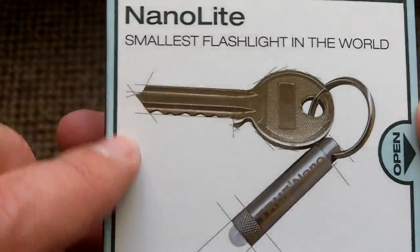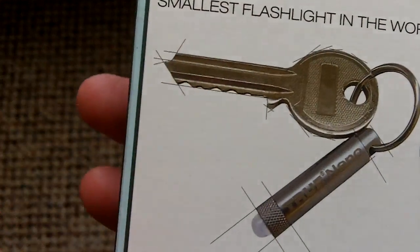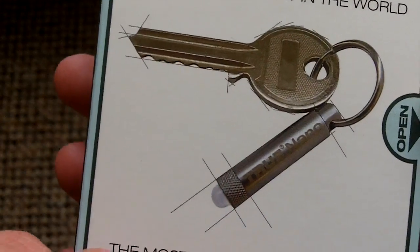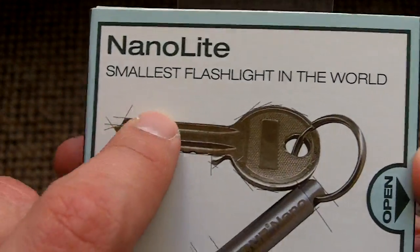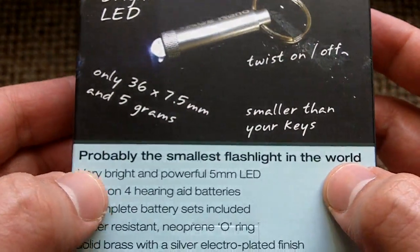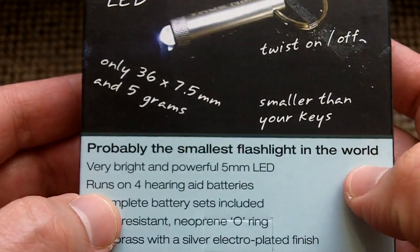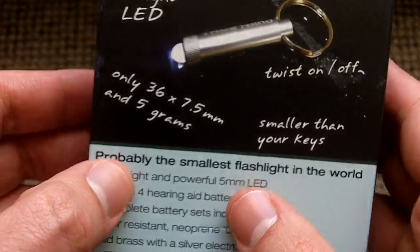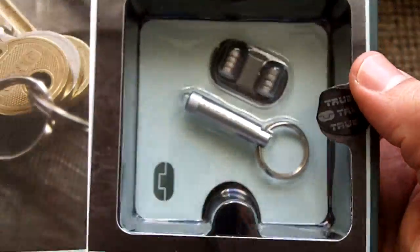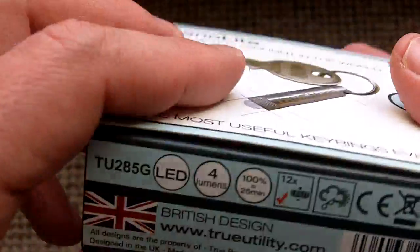So I thought it was nice. It says here smallest flashlight in the world, the most useful keychain key rings ever. But then you turn it around and it says probably the smallest flashlight in the world. So they're already doubting their own claims. Yeah, I think they have a good shot at that. It's probably one of the smallest ones that I know of.